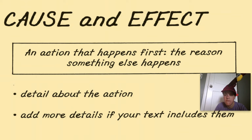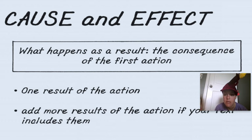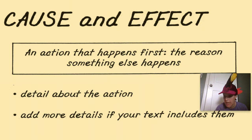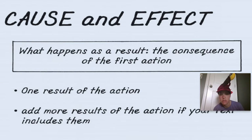Cause: an action that happens first, and the reason something else happens. And effect: what happens as a result — the consequence of the first action. So, cause is the action that happens first, the reason that something else happens. Effect means what happens as a result, the consequence of the first action, or the cause.